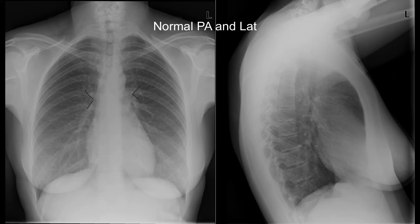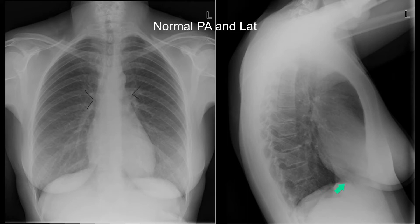On the lateral view, you can see the stomach bubble is here, just popping up above this diaphragm. Therefore this one must be the right hemidiaphragm and this must be the left hemidiaphragm. It actually stops where the heart sits on the diaphragm — further confirmation that this is the left hemidiaphragm.